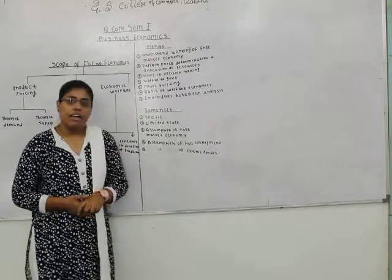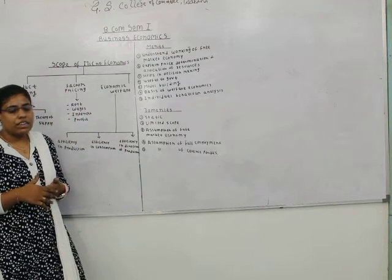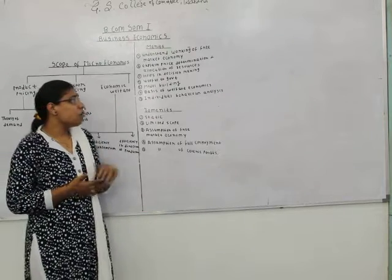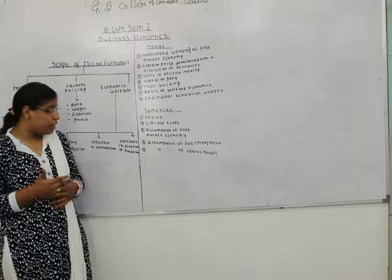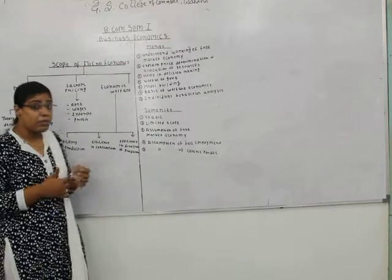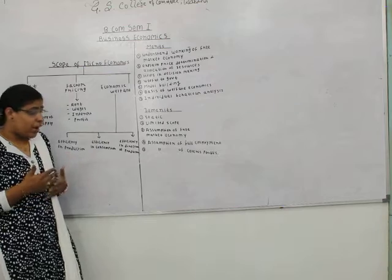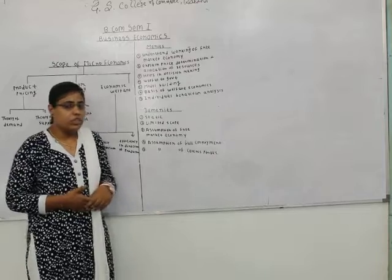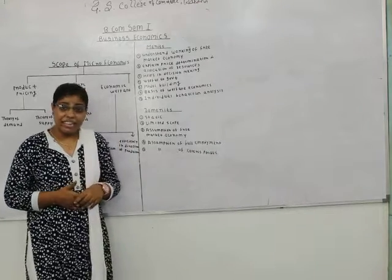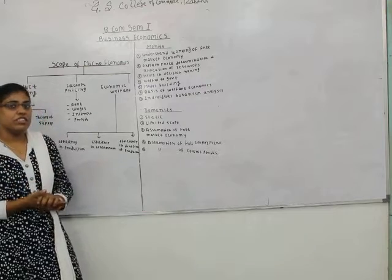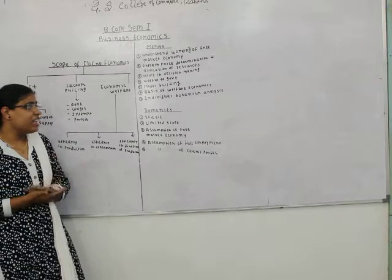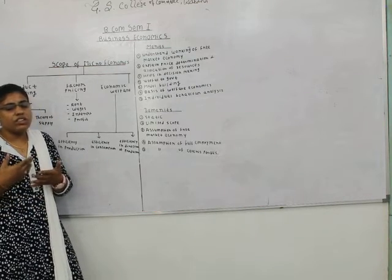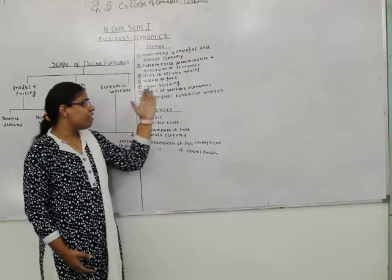The sixth merit is that microeconomics is the basis of welfare economics. Welfare economics deals with allocation of resources and distribution theories. Microeconomics helps make decisions regarding how to bring efficiency in production, efficiency in consumption, and provides ways for achieving efficiency in direction of production. It also helps make proper allocation of resources so that optimum utilization can be made and mistakes avoided, leading to welfare of business and society.